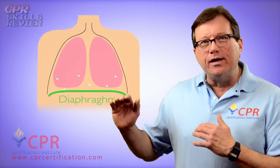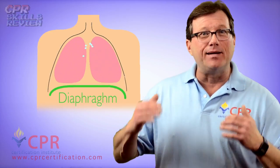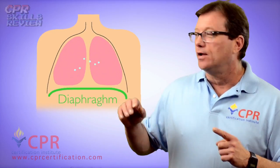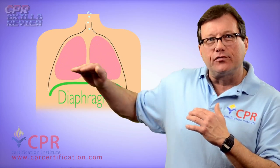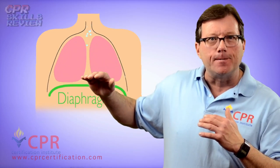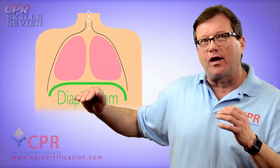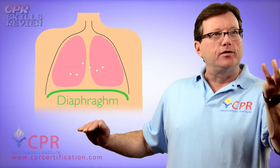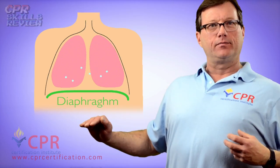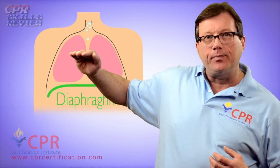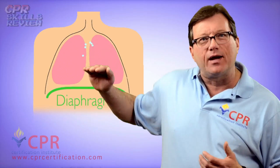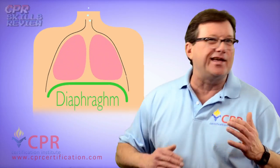Before we talk about doing abdominal thrusts to remove an obstruction from a conscious adult victim, let's look at breathing first. How do people breathe? We take air in and out of the body mostly through contracture of the diaphragm. Your diaphragm sits transverse and separates the chest from the belly. Your diaphragm contracts and drops down, and like a vacuum you passively suck air in. The diaphragm comes up and air comes out of the lungs — it's the diaphragm going up and down that moves air in and out.